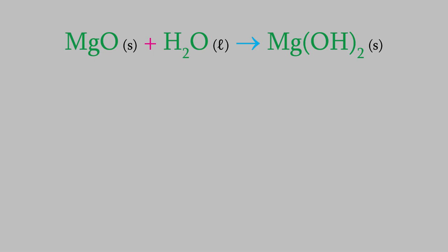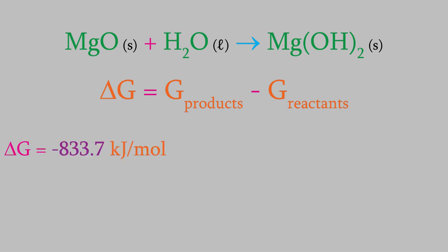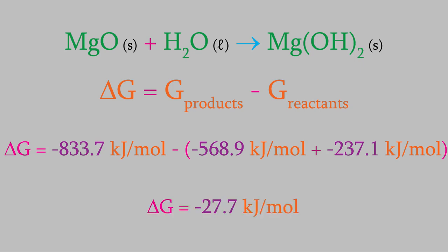For example, take this reaction, which we mentioned earlier. If this reaction takes place at 25.0 degrees Celsius, we can use the data for delta G from Appendix C to calculate the Gibbs free energy for the reaction. When we do, we get negative 833.7 kJ per mole for the product and negative 568.9 and negative 237.1 kJ per mole for the reactants. That gives us an overall delta G of negative 27.7 kJ per mole. That's a negative number, and that means the reaction is spontaneous at this temperature.